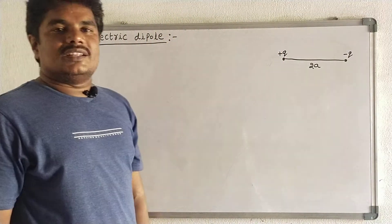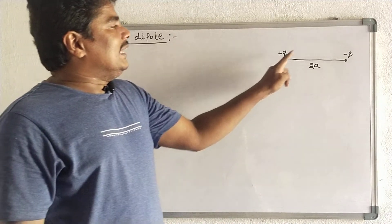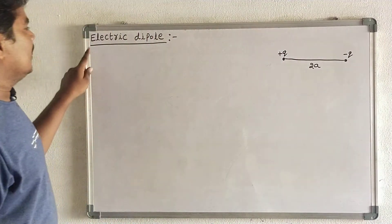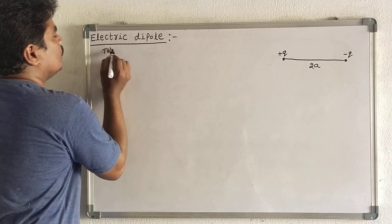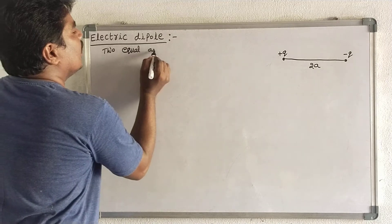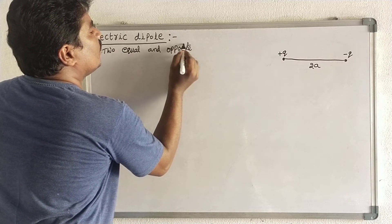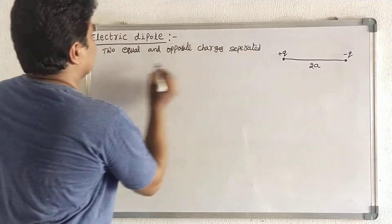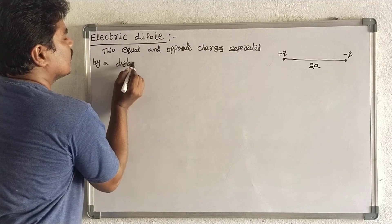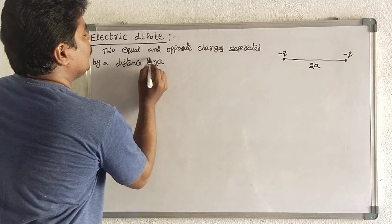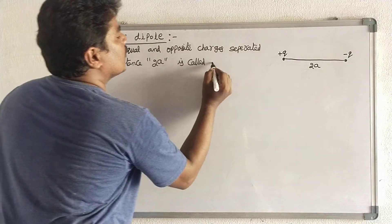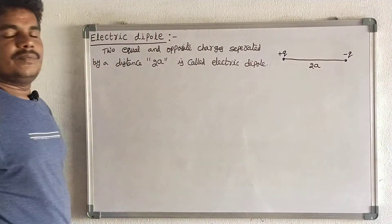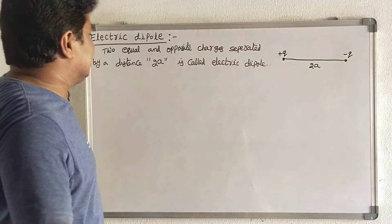That arrangement is called an electric dipole. Two equal and opposite charges separated by a distance 2a is called an electric dipole. Now we discuss about dipole moment — that is, electric dipole moment.